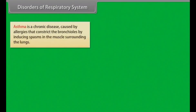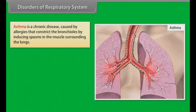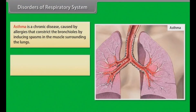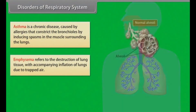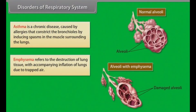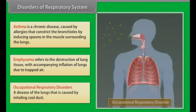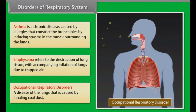Disorders of the Respiratory System. Asthma is a chronic disease caused by allergies that constrict the bronchioles by inducing spasms in the muscles surrounding the lungs. Emphysema refers to the destruction of lung tissue with accompanying inflation of the lungs due to trapped air. Occupational respiratory disorders include diseases of the lungs caused by inhaling coal dust.